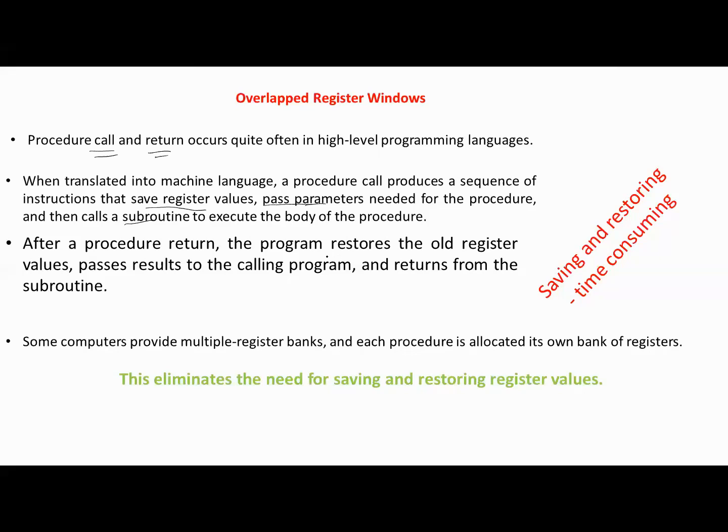The process of saving and passing parameters and restoring and passing results is time-consuming. Some computers provide multiple register banks, and each procedure is allocated its own bank of registers. This eliminates the need for saving and restoring register values.